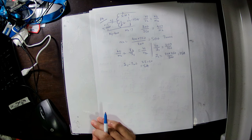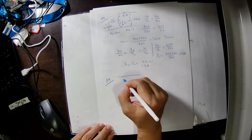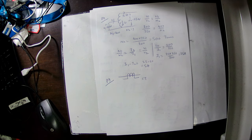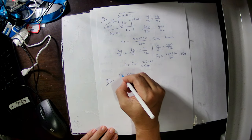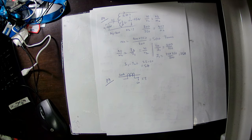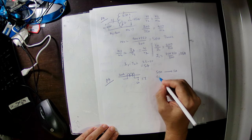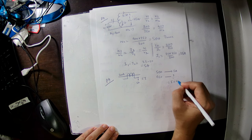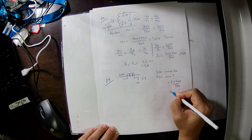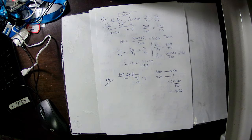Finally, a current transformer (CT) problem. CT ratio is 500/5 A. When primary current is 500 A, secondary current is 5 A. When primary current is 450 A, secondary current equals 5 multiplied by 450 divided by 500, giving 4.5 A. This is how we calculate the secondary current of a CT.